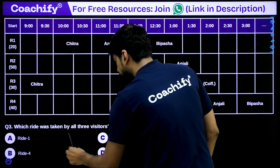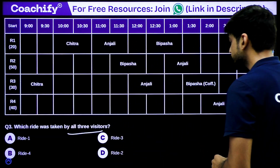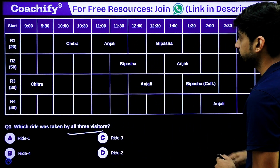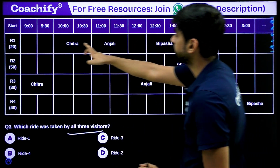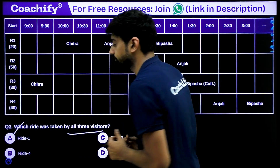Question 3: Which ride was taken by all three visitors? Looking at the table, all three visitors appear in ride 1. The correct answer is option A.